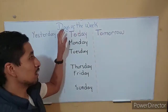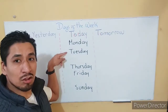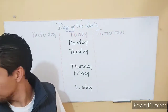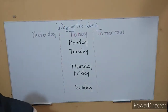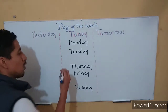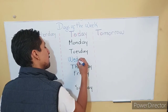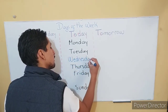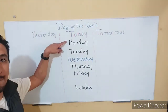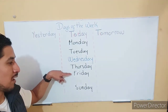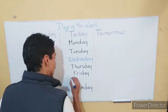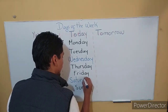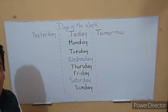Do you remember? Let's see. Which ones were we missing today? We have Monday, Tuesday. What is the one that we are missing? ¿Cuál es el que nos hace falta? Very good. Wednesday. So we have Monday, Tuesday, Wednesday, Thursday, Friday. We are missing one. Saturday. Very good. Saturday. Excellent. Very good.